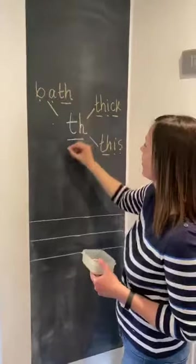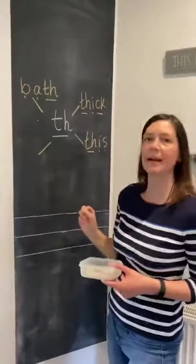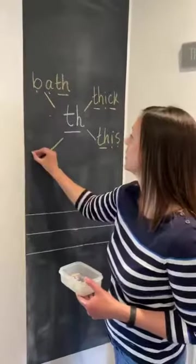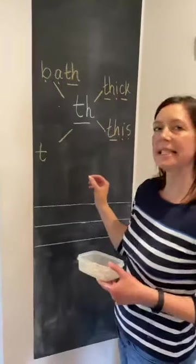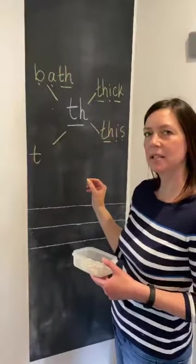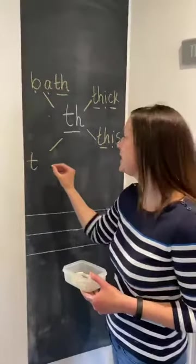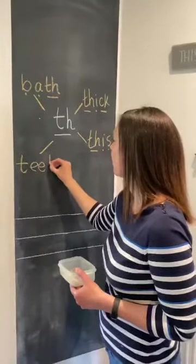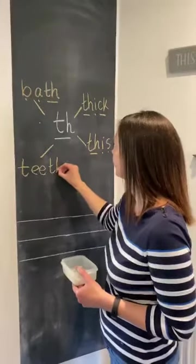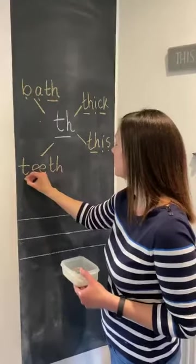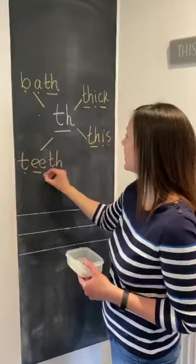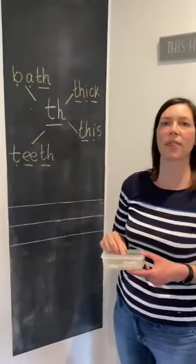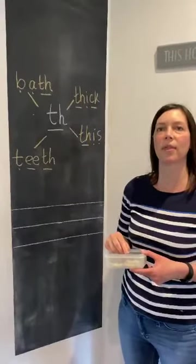And we'll do one more — what about teeth? Your teeth. So we've got th. What comes next in teeth? Th, e, th — teeth. There we go. Lots of words that have the th or the th sound in them.